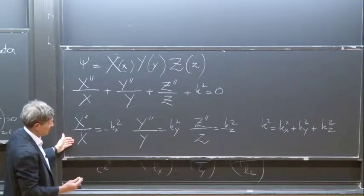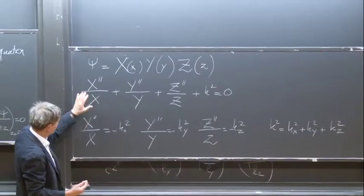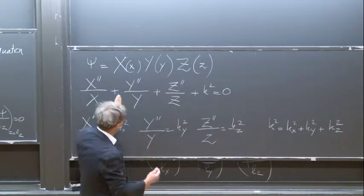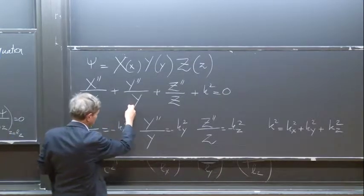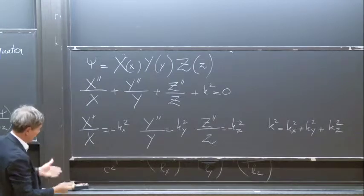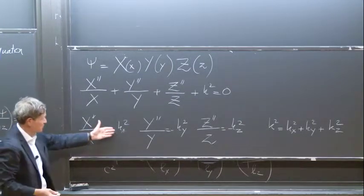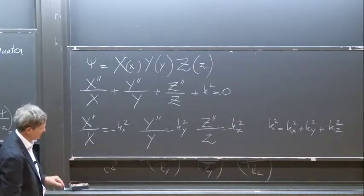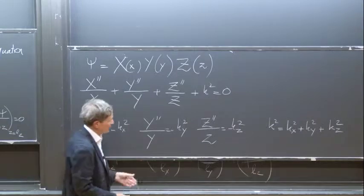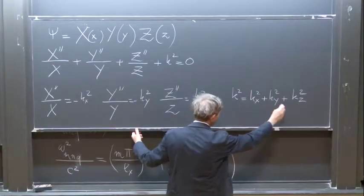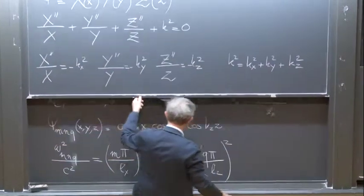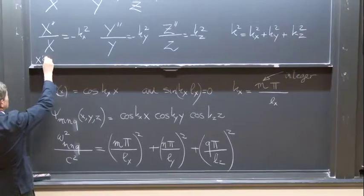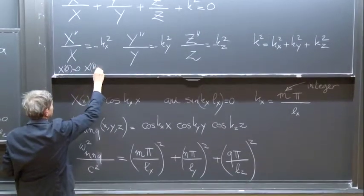You find out that you cannot solve that if these quantities are not constants, because this is a function of x, that's a function of y, that's a function of z. It won't work unless each is a constant. We write the constants as minus kx squared, minus ky squared. You can write the constant as you want — this form is easier and afterwards you will see that everything works fine. When you do that you get k squared equal to kx squared plus ky squared plus kz squared. Now you can try to solve the first problem with boundary conditions: x prime of 0 equal to 0 and x prime of lx equal to 0.